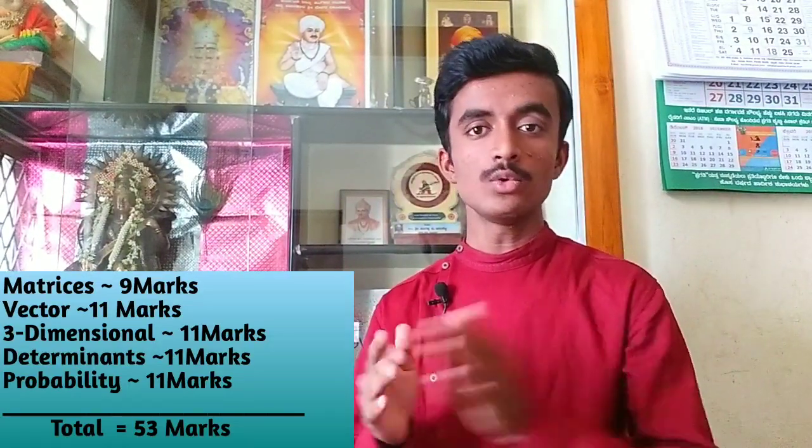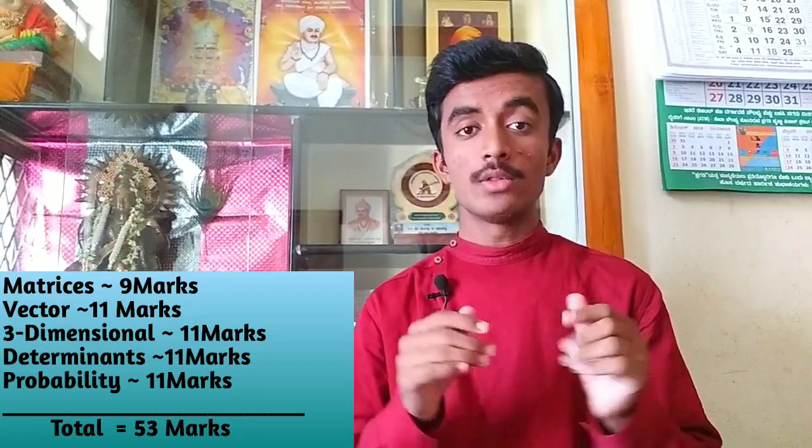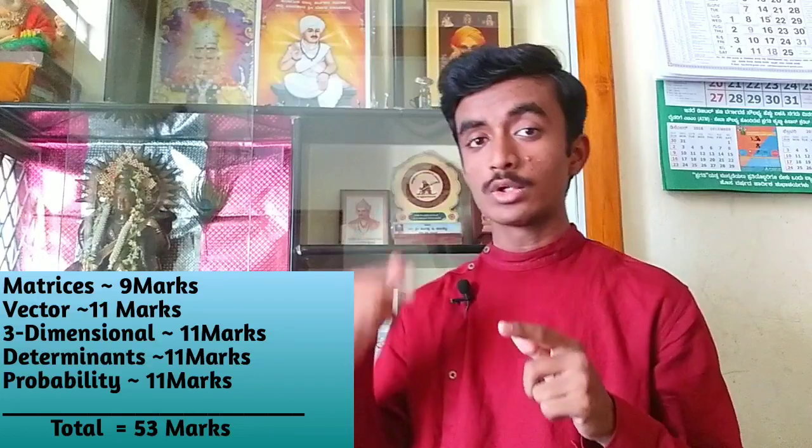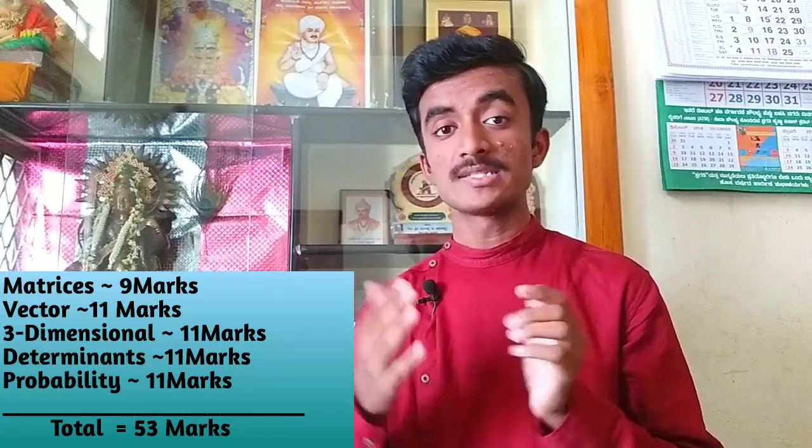If you score 52-53 marks, that matches the Blueprint total marks of 53. You can score those marks by studying only 5 chapters. With just 4 chapters, you can achieve a passing plus score.